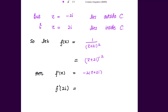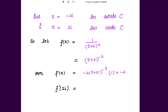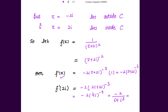The derivative of f(z) is -2(z + 2i)^(-3), since the derivative of z is 1. Evaluating at z = 2i: f'(2i) = -2(2i + 2i)^(-3) = -2(4i)^(-3) = -2 / (64i³). Since i² = -1, the negatives cancel, giving f'(2i) = 1/(32i).